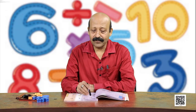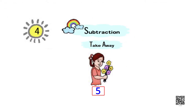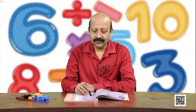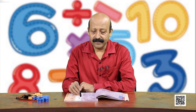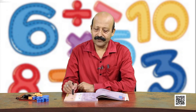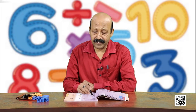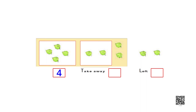Let us now come back to the book. There are 5 flowers with this girl and she has given some to her friend. 5 are already there, 2 have been taken away - so how many are left? 3. Now instead of pictures we write symbols for numbers. Another example: there are 4 leaves, 2 have been taken away, and how many are left? 2 are left.